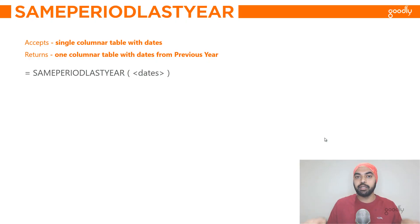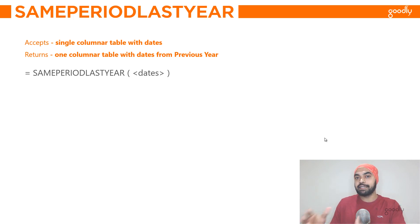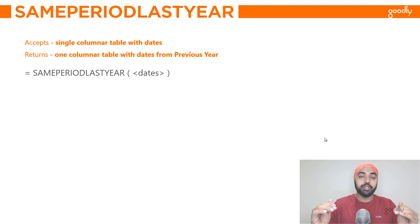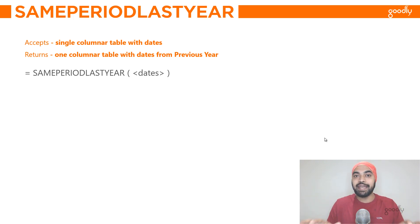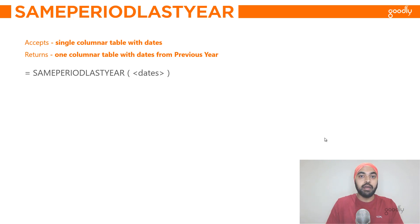Let's just take a look at a quick slide here. When you start writing the SAMEPERIODLASTYEAR DAX function, what you provide inside of that is dates. You can typically pick up a date column of your calendar table. Once you input the date column of the calendar table, what you get as an output is again a table with dates — just one column — but those dates will belong from the last year.